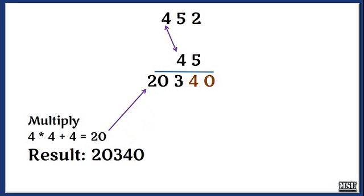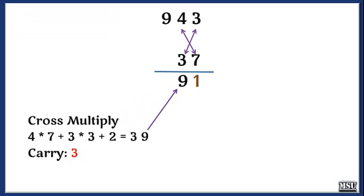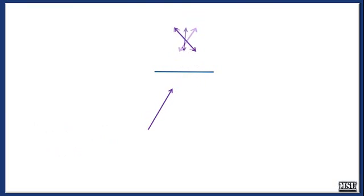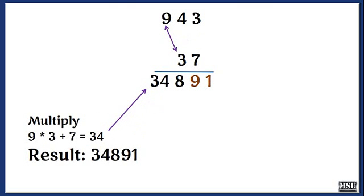The pattern to remember is 1-2-2-1. Let's discuss another example: 943 into 37. First, rightmost multiplication: 3 into 7 equals 21 — write 1, carry 2. Cross multiplication: 4 into 7 and 3 into 3 plus carry 2 equals 39 — write 9, carry 3. Left out 3; cross multiply again: 9 into 7 and 4 into 3 plus carry 3 equals 78 — write 8, carry 7.